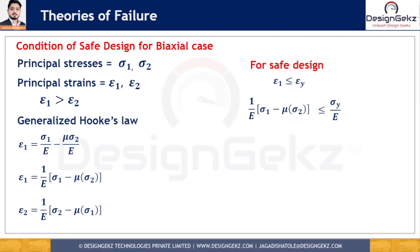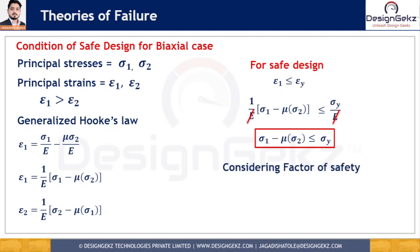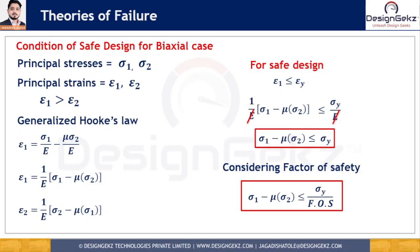The equation for safe design can be written as (1/E) times (sigma 1 minus mu times sigma 2) less than sigma y divided by E. Cancelling E from both sides gives: sigma 1 minus mu times sigma 2 less than sigma y. Considering the factor of safety, this becomes: sigma 1 minus mu times sigma 2 less than sigma y divided by factor of safety. This is the safe design criteria for biaxial loading conditions according to the maximum principal strain theory.